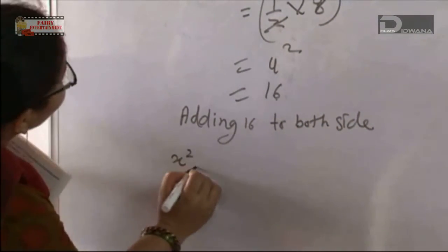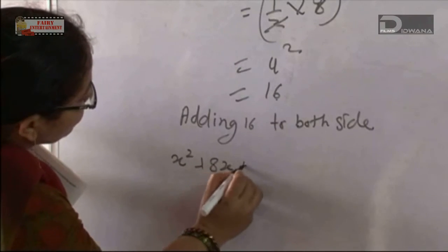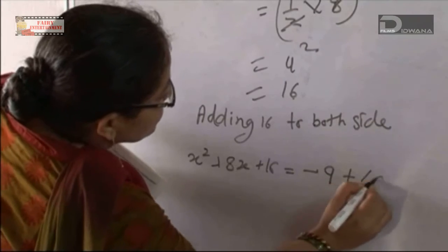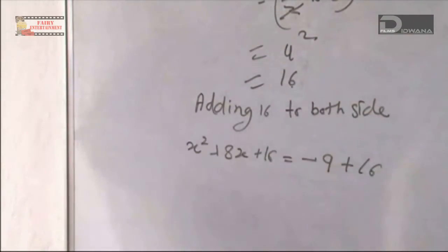x² + 8x + 16 = -9 + 16. This means both sides we added 16.